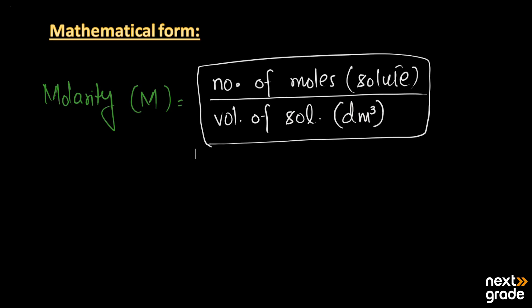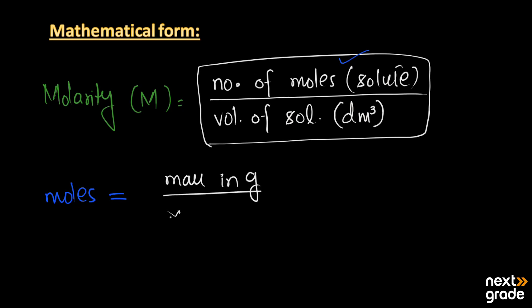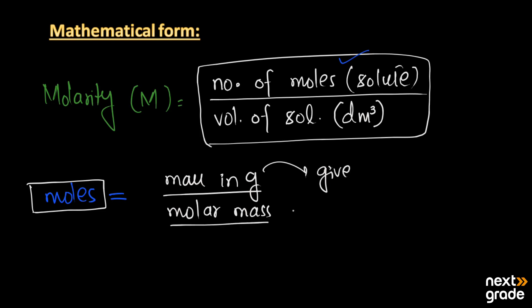Before using this formula, we must have the number of moles. The formula to find the number of moles is: moles = mass of substance in grams divided by molar mass. To find the molar mass, we add the atomic masses of all the atoms present in the substance.